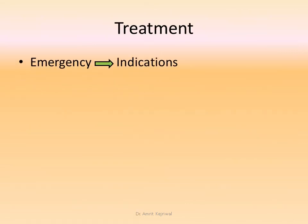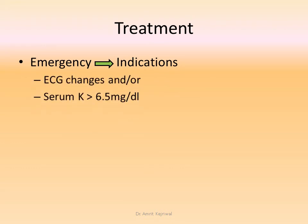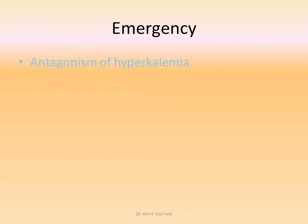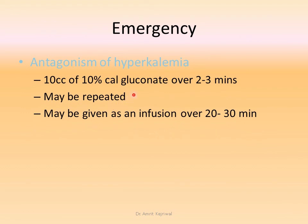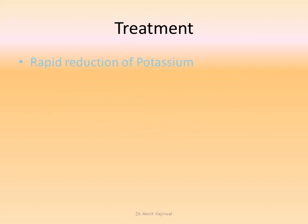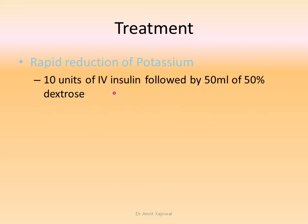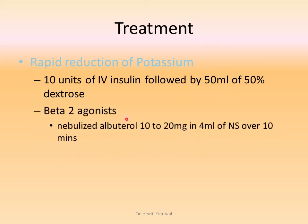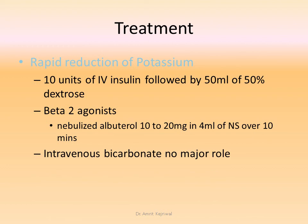Treatment: emergency indications include ECG changes and/or serum potassium greater than 6.5 mEq/L. In an emergency, we have to antagonize the hyperkalemia: give 10 cc of 10% calcium gluconate over 2-3 minutes, which may be repeated. For rapid reduction of potassium, give 10 units of IV insulin followed by 50 ml of 50% dextrose. Beta-2 agonists may be used: nebulized albuterol 10-20 mg in 4 ml of normal saline over 10 minutes. Intravenous bicarbonate has no major role in controlling the rapid reduction of potassium.